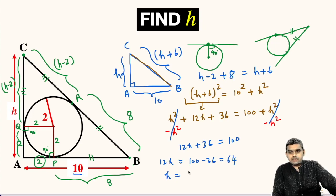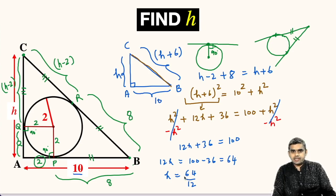So, H will be 64 divided by 12. Let us simplify this. We can cancel the numerator and denominator by 4.